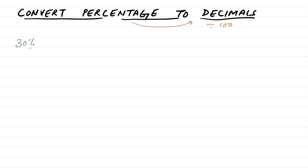For example, if we have 30 percent, we divide by 100: 30 divided by 100. We can cancel the zeros — 30/100 simplifies to 3 divided by 10, which equals 0.3.